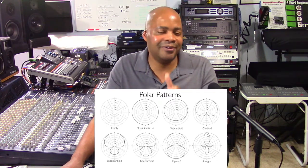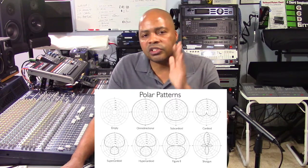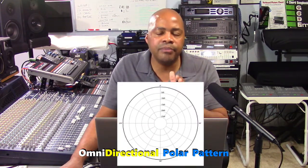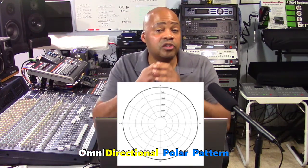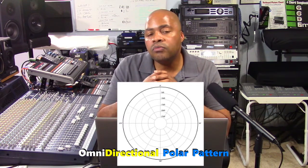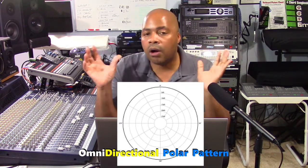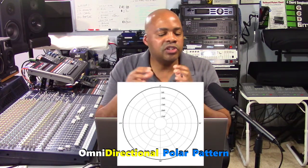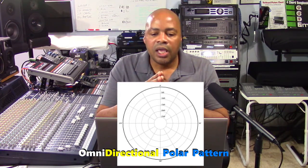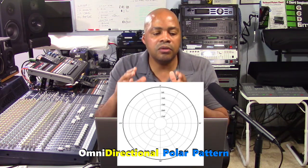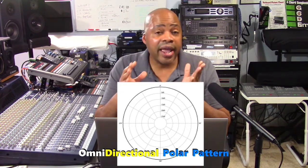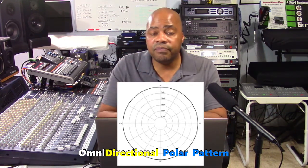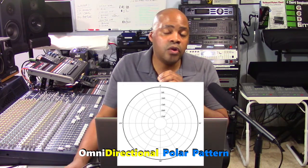Now let's get back to how polar patterns drive different microphone types. We'll start with omnidirectional microphones. These microphones pick up sounds from every direction — 360 degrees — capturing more of the essence of the overall environment. They can produce sound that's more natural and pleasing, especially in a room where the acoustics are exceptional. These mics are best suited for quiet environments due to their inability to block feedback and noise.